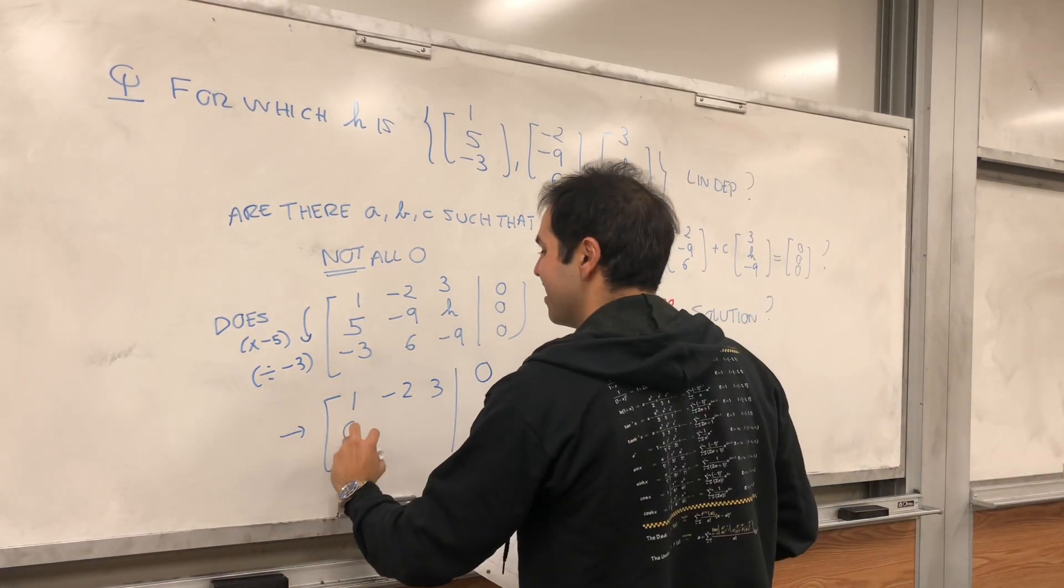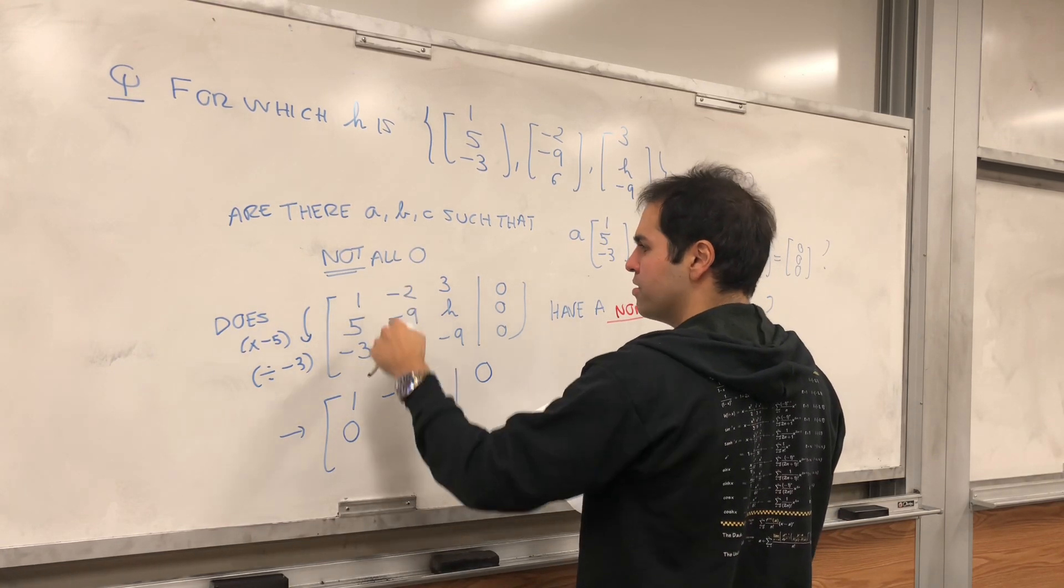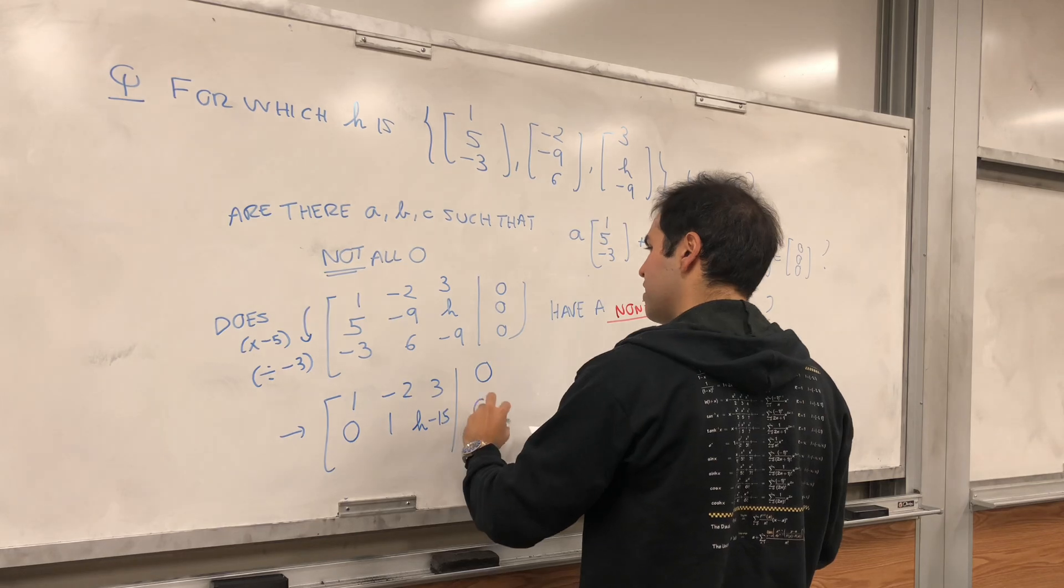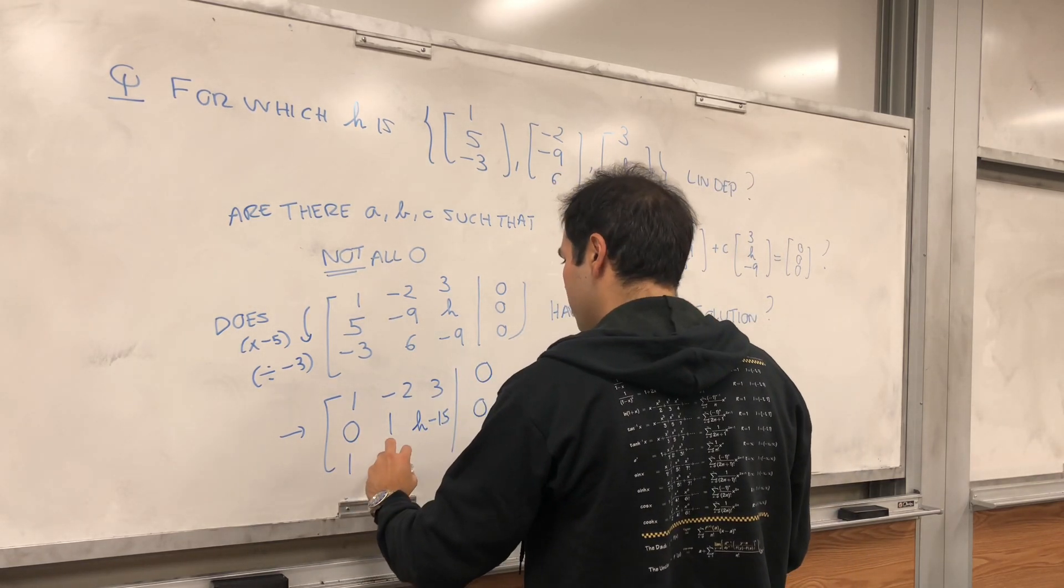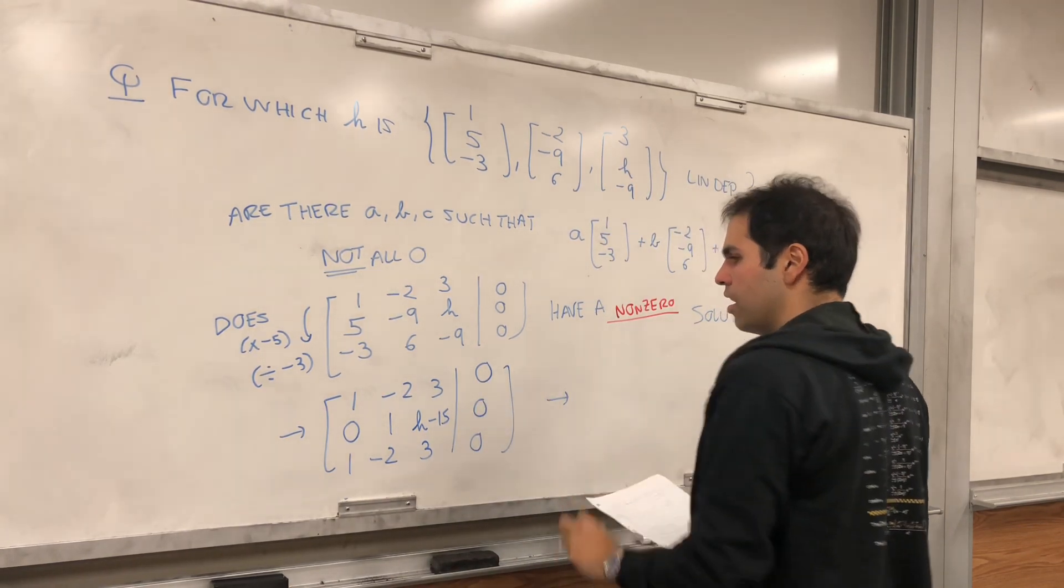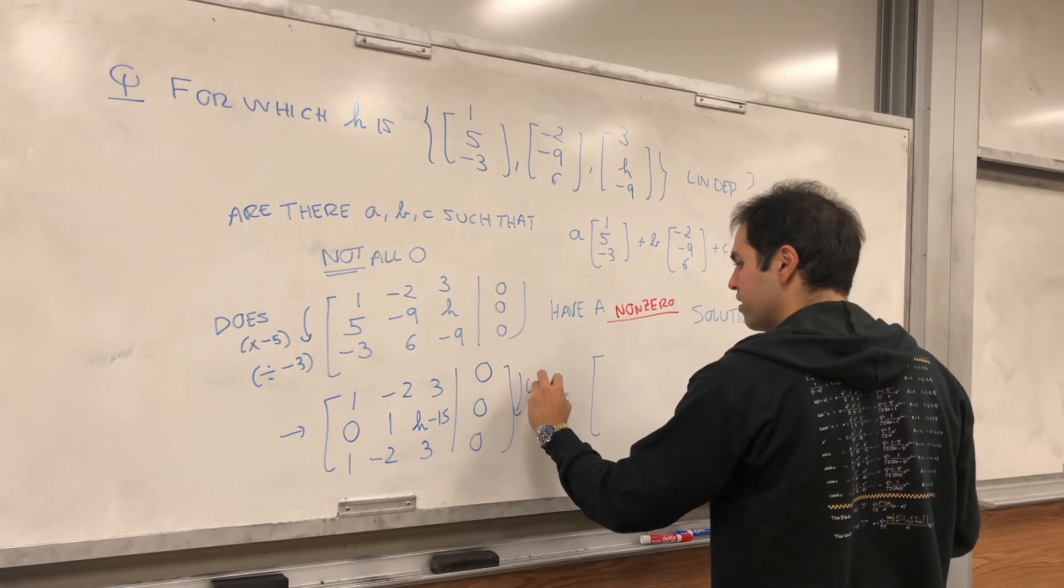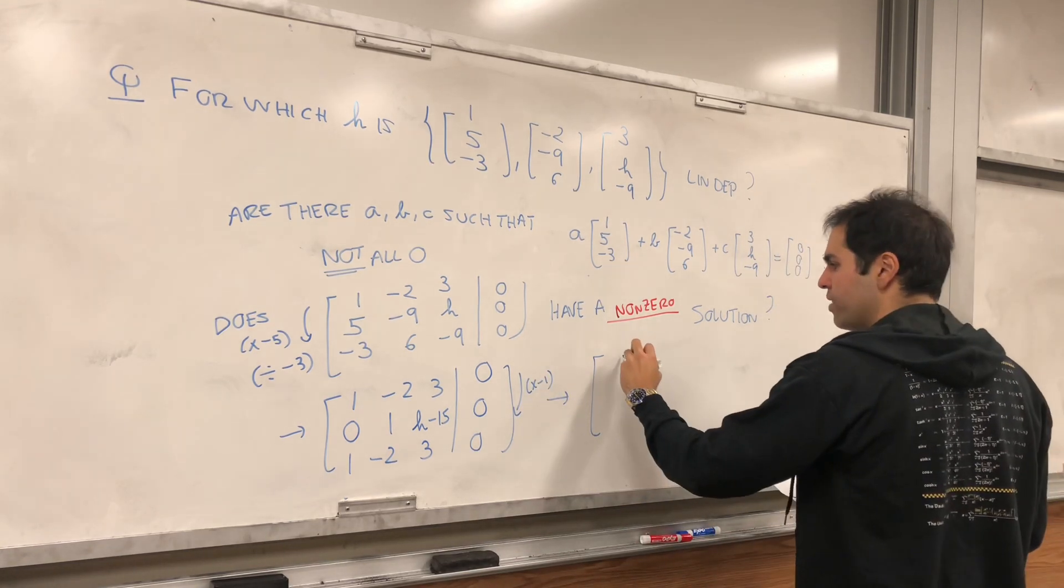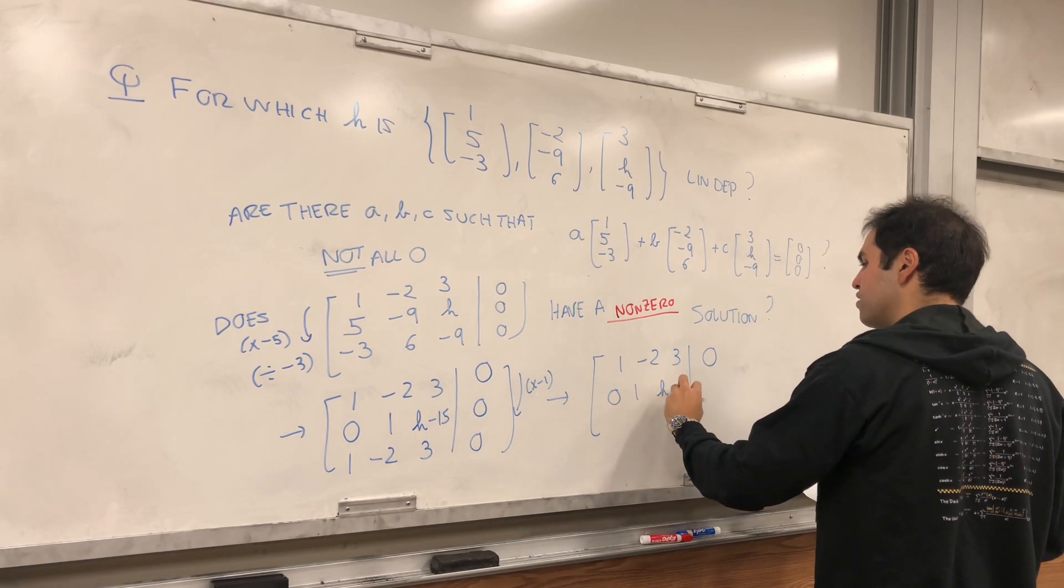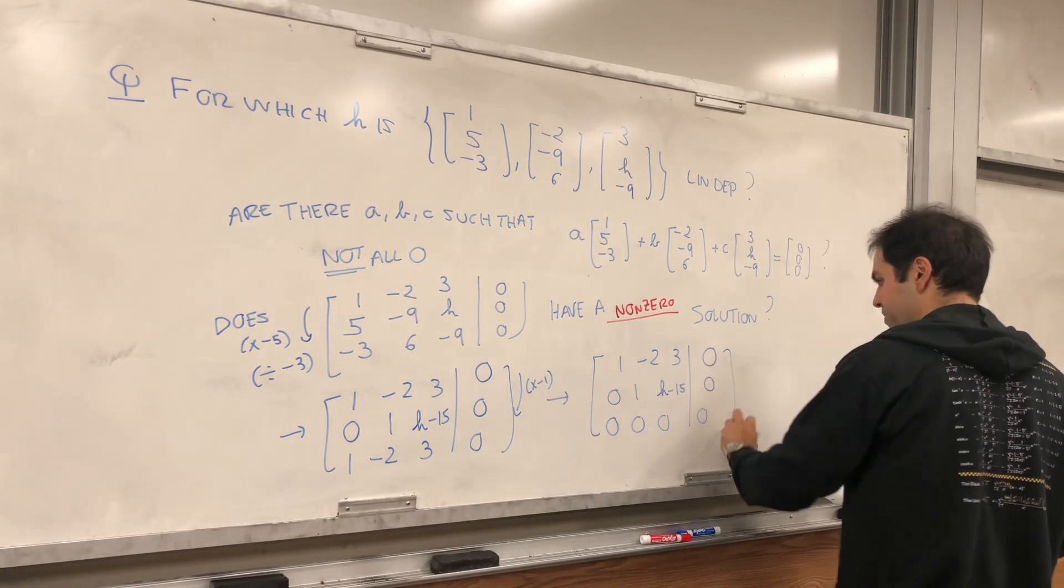Let's subtract the first row from the second row. So 5 minus 5 is 0, 9 plus 10 is 1, and then h minus 15, and 0. And then this becomes just 1, minus 2, 3, and 0. Nice. Very nice.